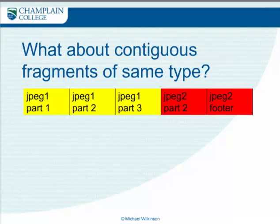That works up until a point, but if you've got a fragment at the end of the start of the file — in this example you've got three clusters: JPEG1, followed by a couple of clusters, JPEG2 with a footer. You've got the header, you've got the footer, it's all JPEG data, so a carving tool is going to think it's a complete picture, but you're still going to come up with an incorrect file.